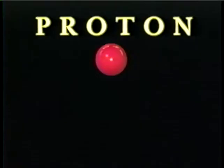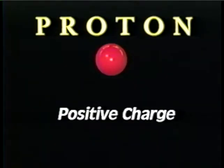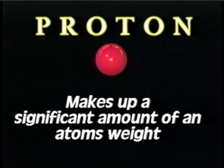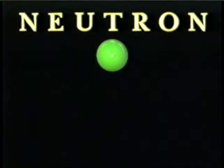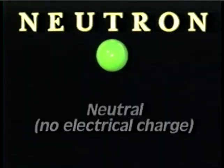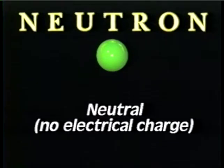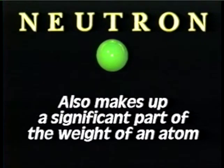We'll start in the center of the atom — the nucleus. First, there is the proton. It is positively charged and makes up a significant amount of the weight of the atom. The other part of the nucleus is the neutron. The neutron is a neutral particle, meaning it has no electrical charge. It makes up another significant part of the weight.